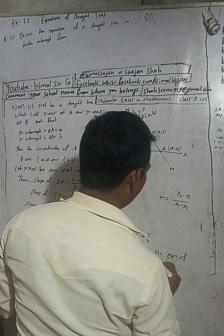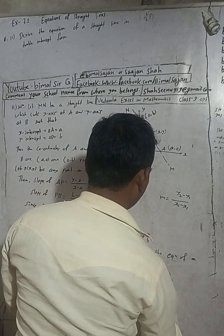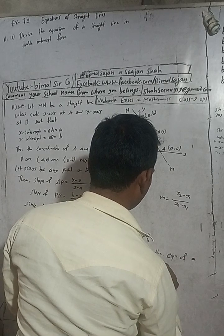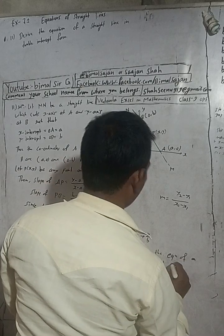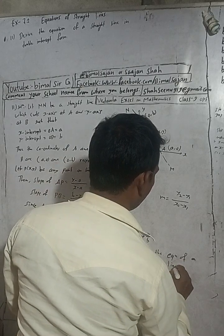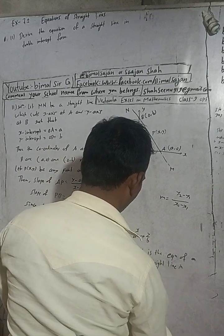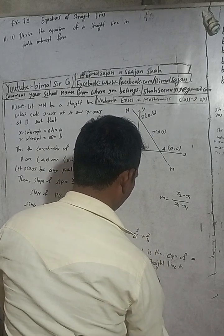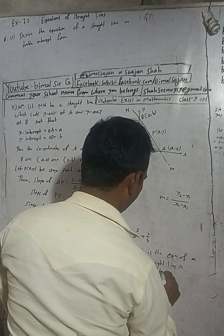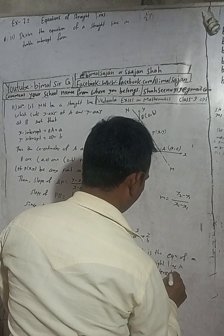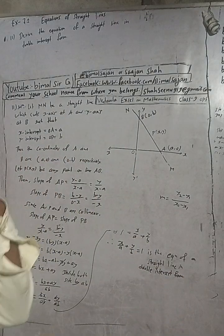This is the equation of the straight line in double intercept form. This completes the derivation.